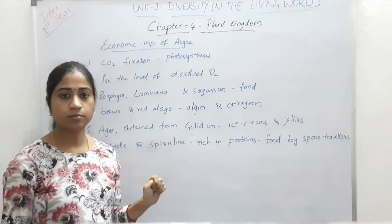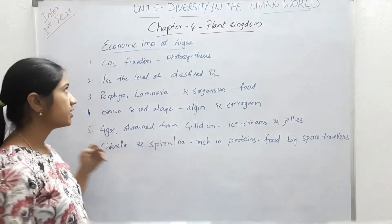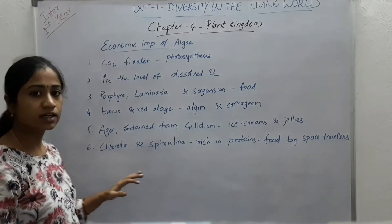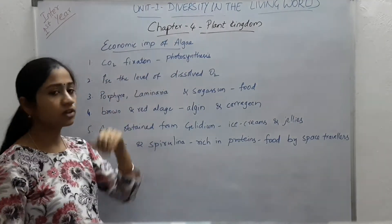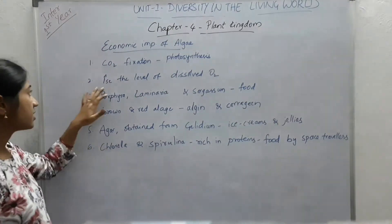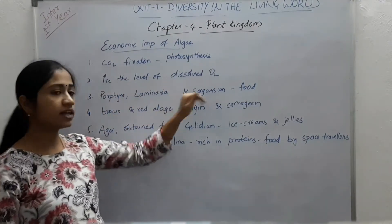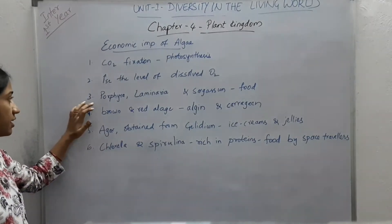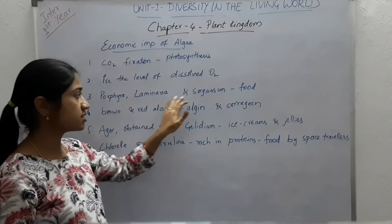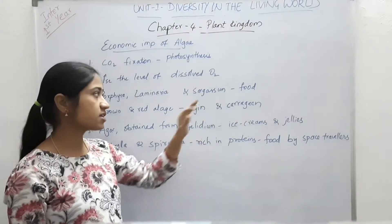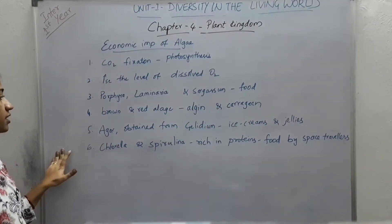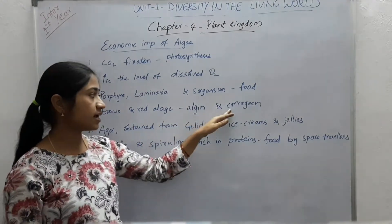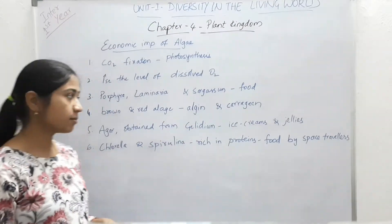Let us see the economic importance of algae. Algae play a major role in carbon dioxide fixation on earth by performing photosynthesis. They also increase the level of dissolved oxygen in their environment. Algae like Porphyra, Laminaria and Sargassum are used as food supplements. Brown algae and red algae produce algin and carrageenan, which are used for commercial purposes.